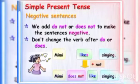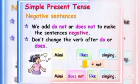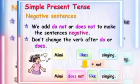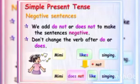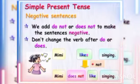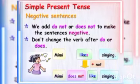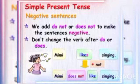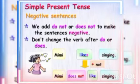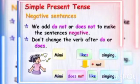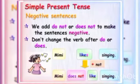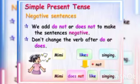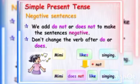Now let's see how to use simple present tense for negative sentences. We add DO NOT or DOES NOT to make sentences negative, and we do not change the verb after DO or DOES. Like, Mimi likes singing — this is a simple present tense sentence. If I want to change it to negative, I write: Mimi does not like singing. I have not added S now; I have just added DOES NOT to make it negative. I hope the concept of simple present tense is clear to you all, and you must have enjoyed it also.